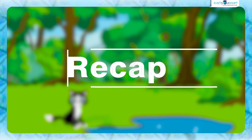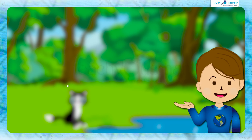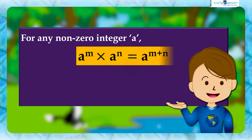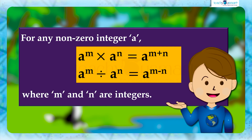Let's have a quick recap. For any non-zero integer a: a raised to m multiplied by a raised to n equals a raised to m plus n; a raised to m divided by a raised to n equals a raised to m minus n, where m and n are integers.